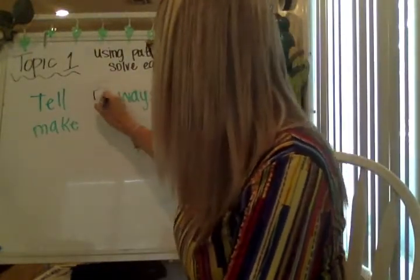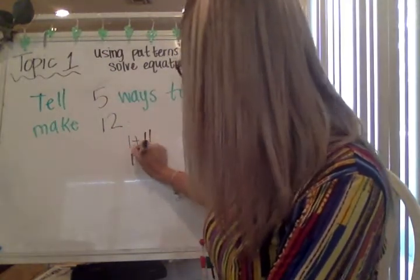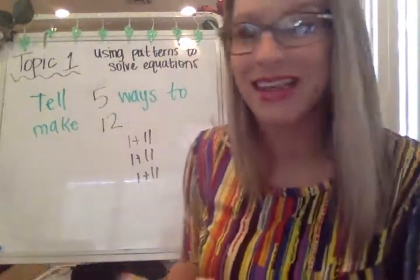So some of these where it says tell a certain number of ways, make sure that they're different ways. Don't write, if it said tell five ways to make 12, don't say one plus 11, one plus 11, one plus 11. Come on, y'all. You could think of way more ways than that.